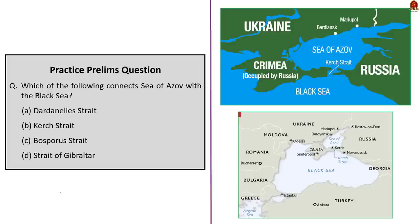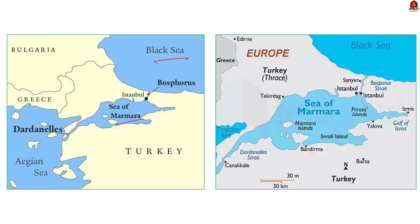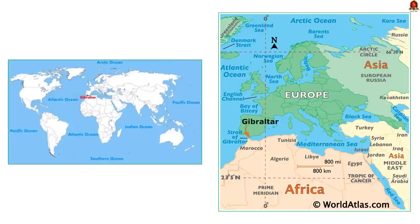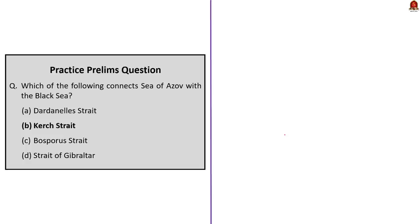The next question is about the strait that connects the Sea of Azov with the Black Sea. Because of the Russia-Ukraine war, we may expect a map question about Ukraine's location or water bodies nearby. The strait that connects the Sea of Azov with the Black Sea is the Kerch Strait. The strait that connects the Black Sea with the Sea of Marmara is the Bosphorus Strait. The strait that connects the Sea of Marmara with the Aegean Sea is the Dardanelles Strait — these two straits separate Asian Turkey from European Turkey. The Strait of Gibraltar connects the Atlantic Ocean directly to the Mediterranean Sea, separating Europe from Africa. The correct answer is option B: Kerch Strait.